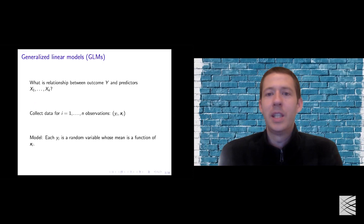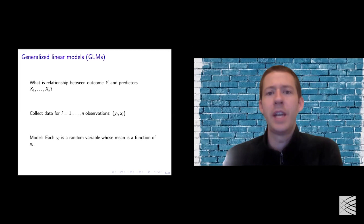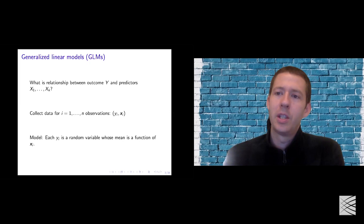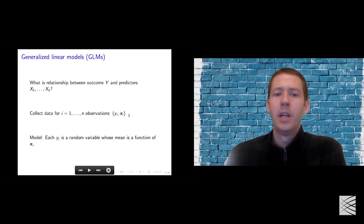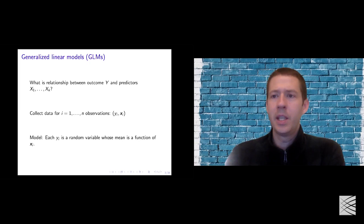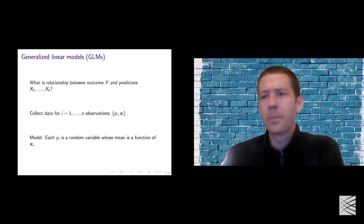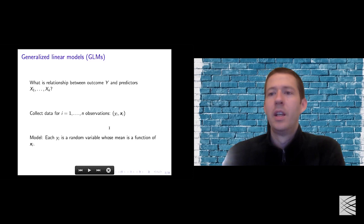Basically, the way a generalized linear model works is it's essentially a regression or classification type of model where you have some number of predictors and an outcome, and you want to explain the relationship between them. We collect data as pairs of observations where x is a vector of all the different predictors and y is usually just a scalar. It could be counts, binary, or real-valued — it's sort of open-ended. The key thing is that we model the outcome y as a random variable where the mean is some function of x, the covariates or predictors.